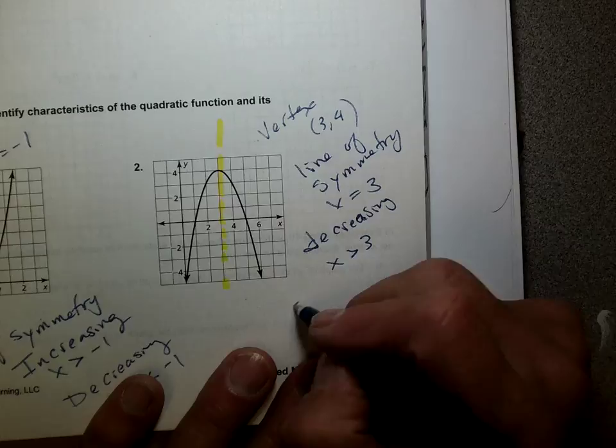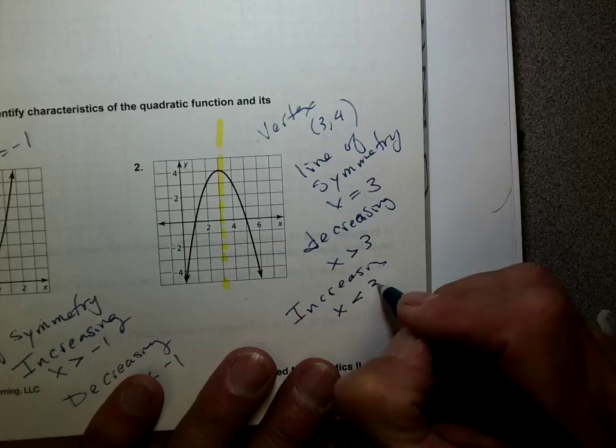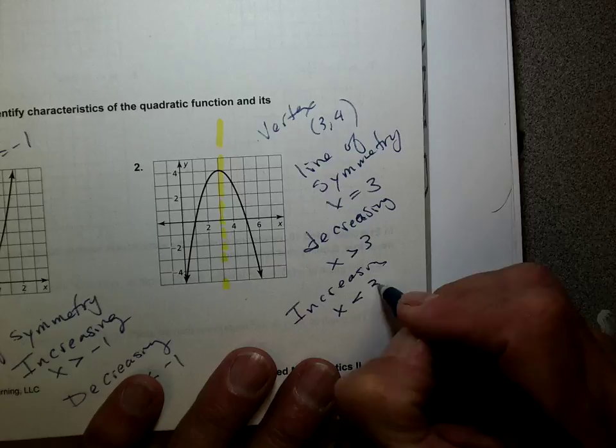From past three, it's decreasing — going downhill, going small, going down. Thumbs up.